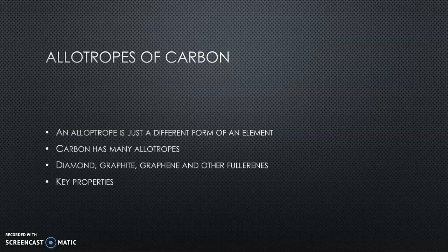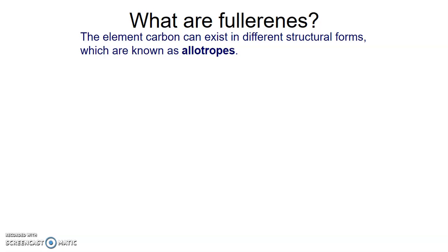Carbon has many allotropes. We've looked at diamond and graphite - those are two of them because they have two different forms of carbon. There is also one called graphene that we'll look at in a moment, and there are others called fullerenes which we'll look at as well. All of these have key properties which make them very useful to us and potentially very useful in the field of science and technology.